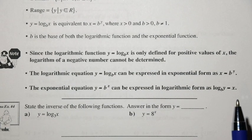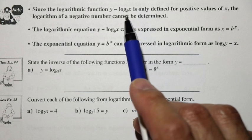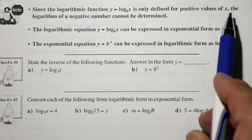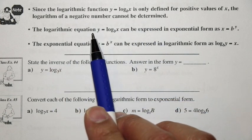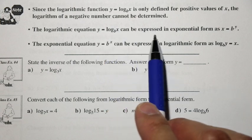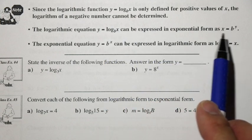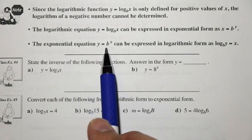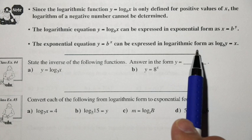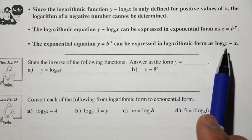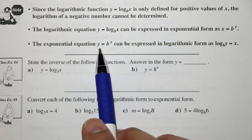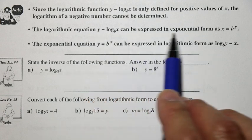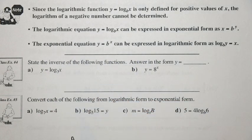Since the log function y equals log base b of x is only defined for positive values of x, the logarithm of a negative number cannot be determined. The log function y equals log base b of x can be expressed in exponential form as x equaling b to the y. And the exponential equation y equals b to the x can be expressed in log form as log base b of y equaling x. It's important to know your x and y values, especially since the log function is an inverse of an exponential function, and therefore there is some interchanging as well.